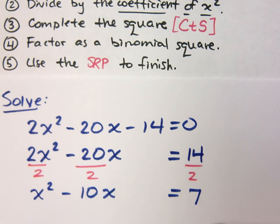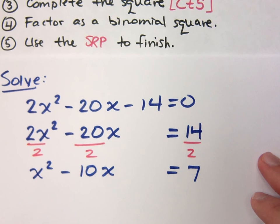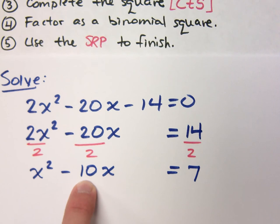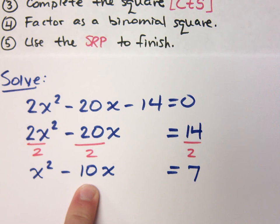Now here's something you need to think about in terms of whether we should use completing the square or not. My third step is to complete the square. This is where you divide by 2 and square it. When would it be difficult to divide by 2 and square it? If it doesn't divide evenly by 2 — meaning it's not even, or if it's already a fraction — that could cause us problems. Since this number is even, dividing by 2 and squaring it is easy.